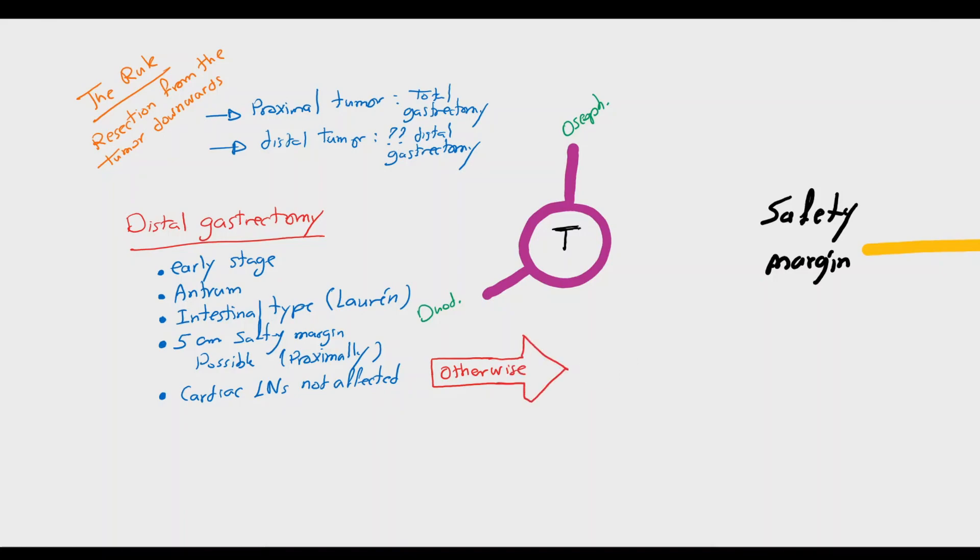Also, in cases of distal tumor in the antrum, the lymphatic spread to stations 10 and 11 is highly unlikely.